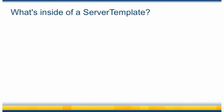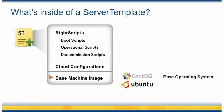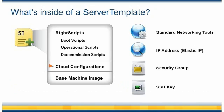So what's inside of a server template? A server template consists of three main parts: a base machine image, or AMI, some cloud-specific configurations depending on the type of cloud infrastructure, and a list of RightScripts. Each server template starts with an installation of a base operating system such as CentOS or Ubuntu.